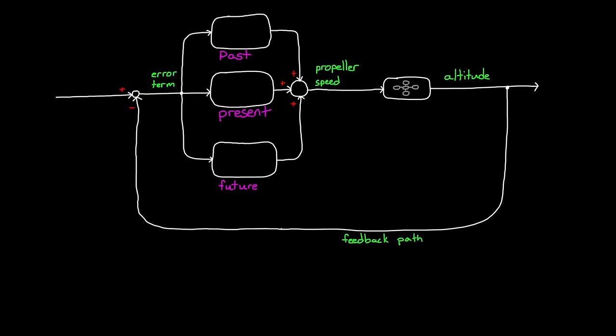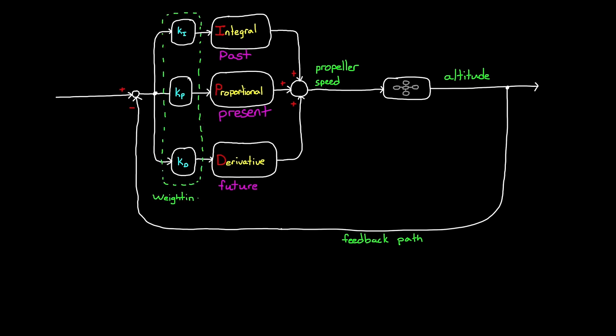And just like that, we've created a PID controller: proportional, integral, derivative. This is a versatile controller that uses the present error, the past error, and a prediction of the future error to calculate the appropriate actuator commands. These three branches each contribute some amount to the overall output of the controller. And as the designer, you get to decide how to weigh each contribution. You do this by adjusting the gain term in each branch. This is called tuning the controller.